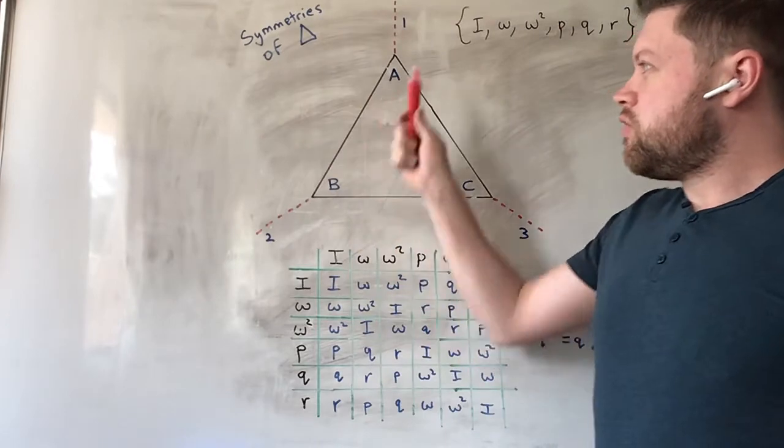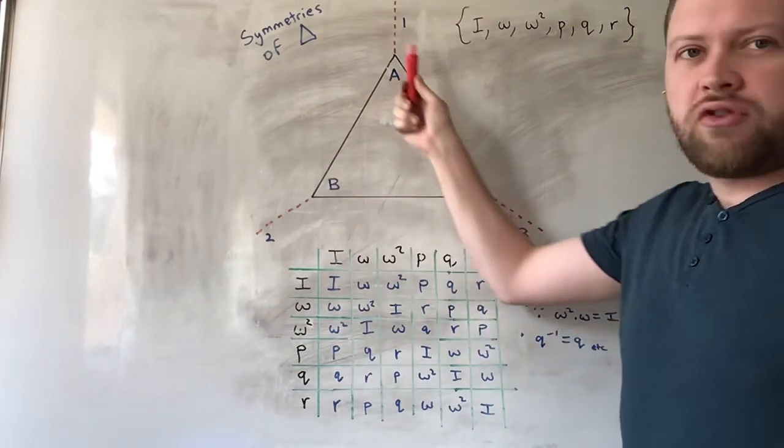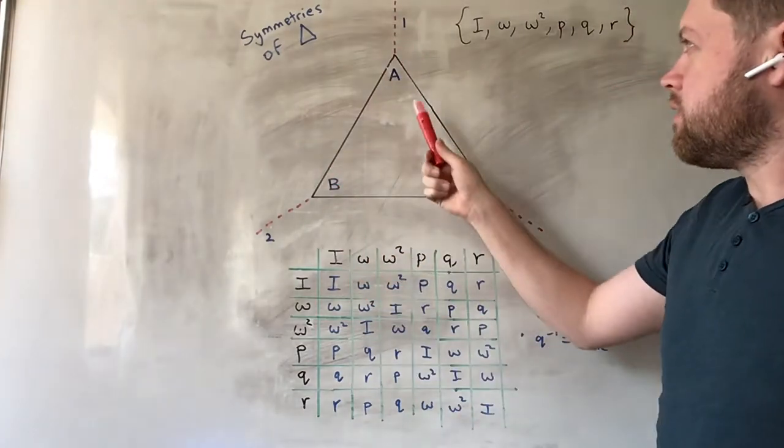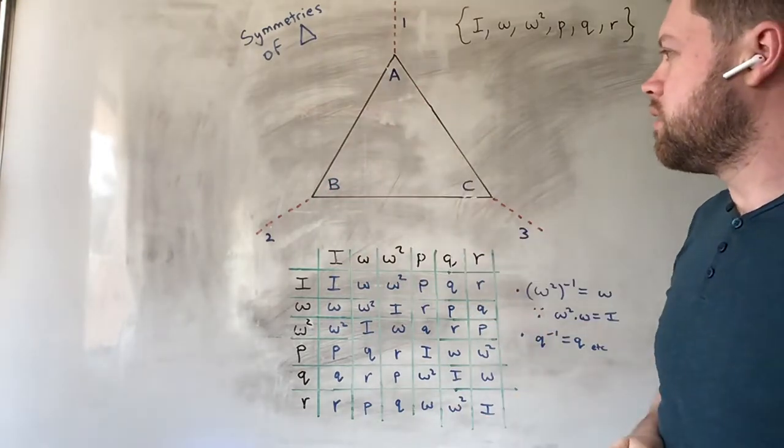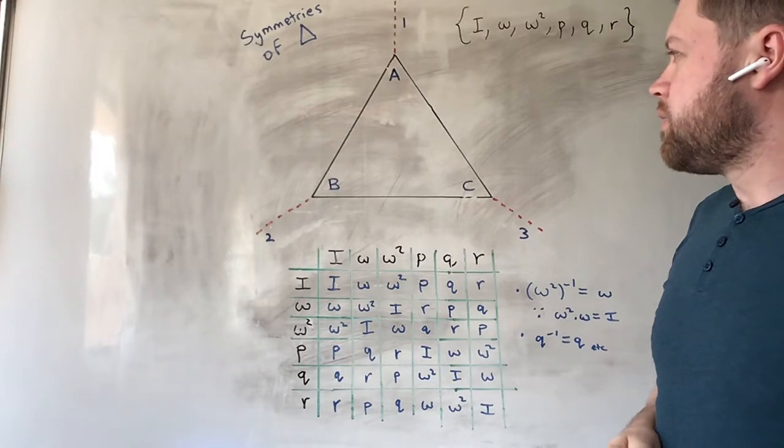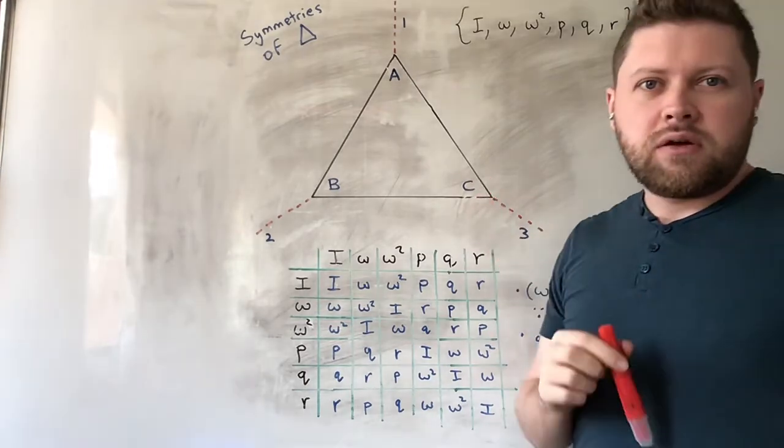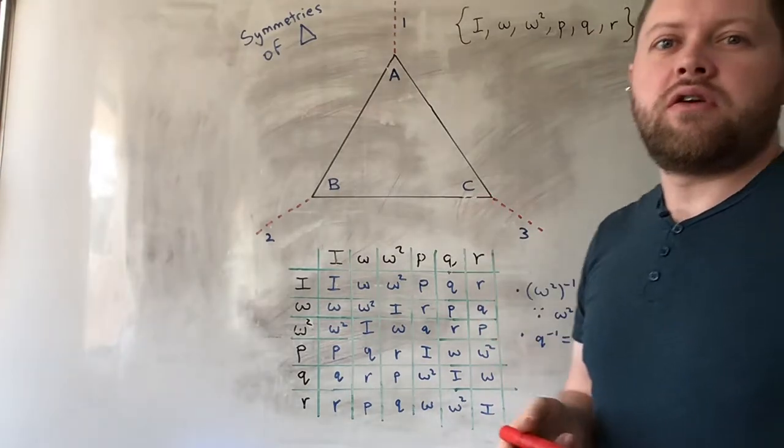So, as I say, we're looking at the symmetries of an equilateral triangle. That's a triangle that has the same length of sides and the same angles internally. So let's think about the symmetries of this triangle.